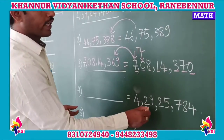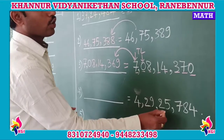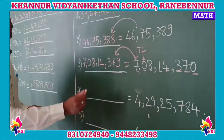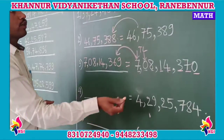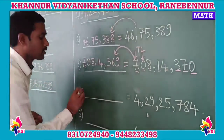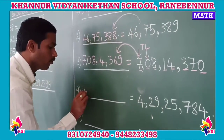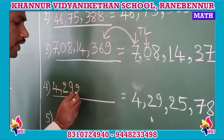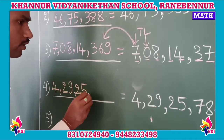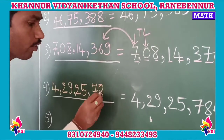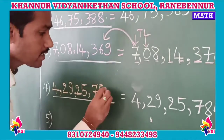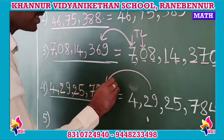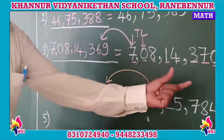The next number is 4 crore, 29,25,784. We want to write the predecessor. My dear kids, the just-before number of 784 is 783, so the predecessor of 4 crore, 29,25,784 is 4 crore, 29,25,783.